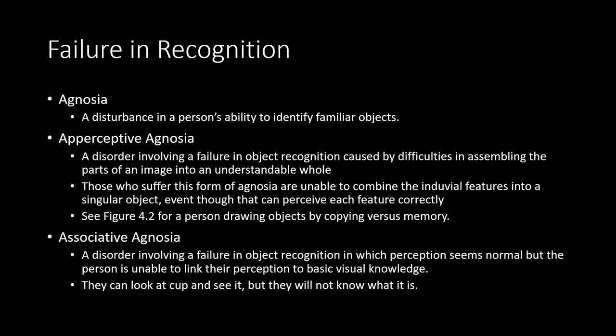Let's start by looking at some failures to recognize certain visual objects. These are generally classed as agnosias, which are a disturbance in a person's ability to identify familiar objects. There are multiple different types of agnosia, of which two are presented here.